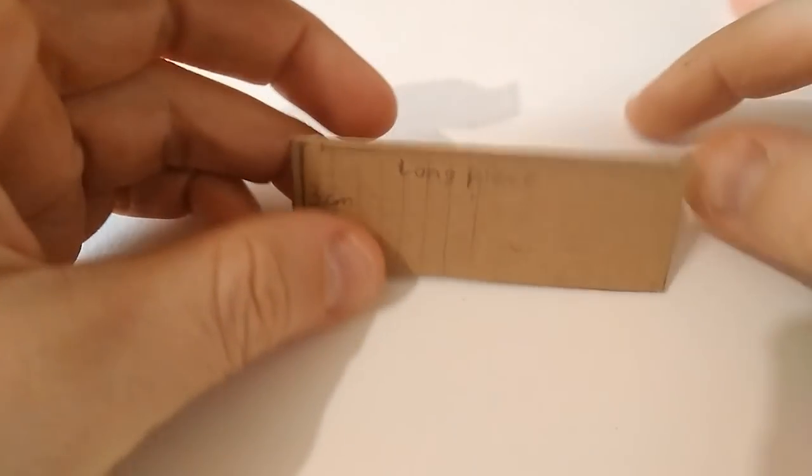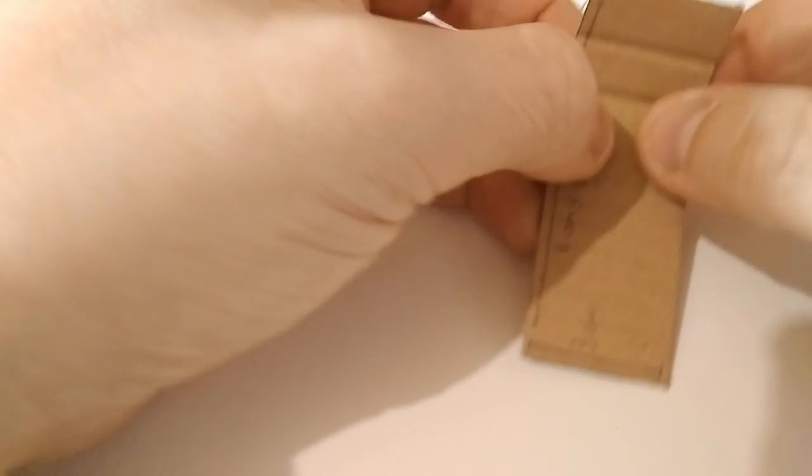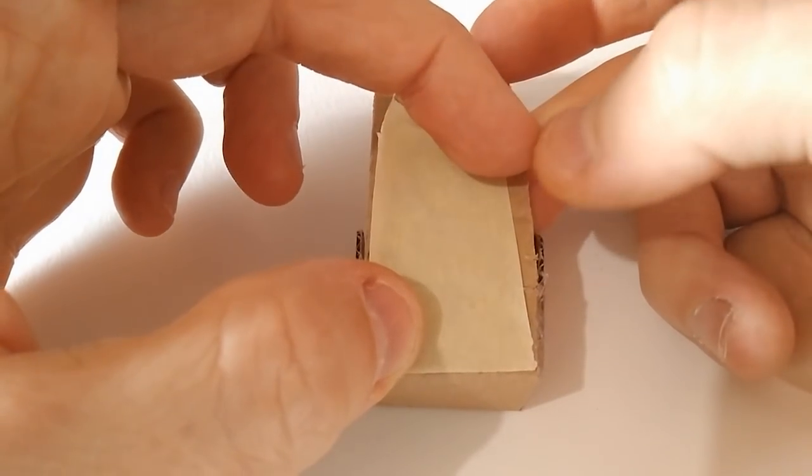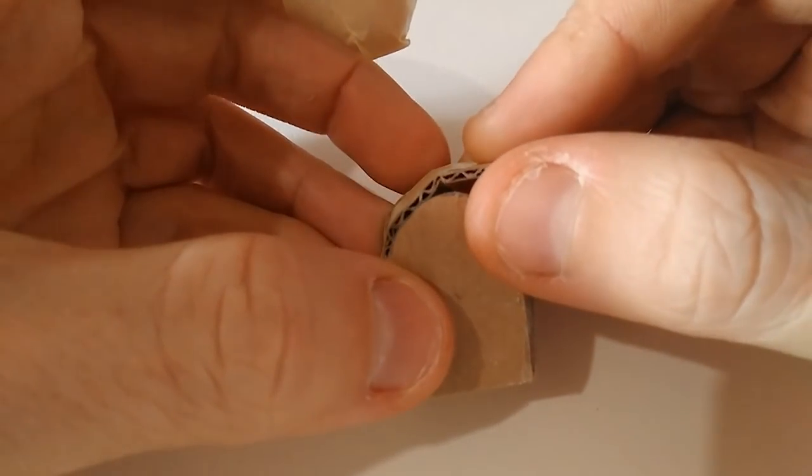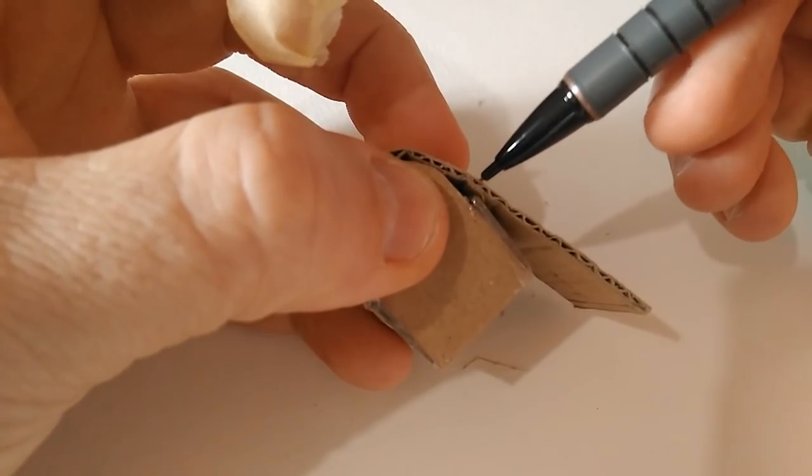Now this long strip is going to make the lid. Use the corrugation to bend it several times until you get a nice curve. Line it in place and tape this side, then wrap it around until you reach around halfway of the curve. Draw a line where you should cut the excess.